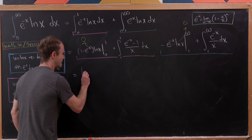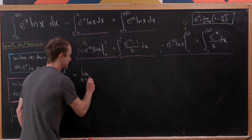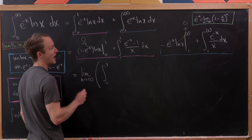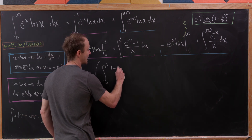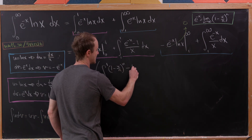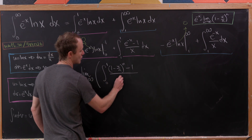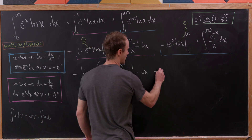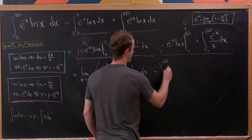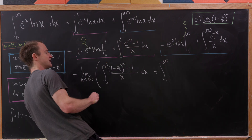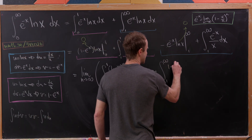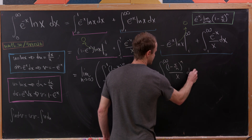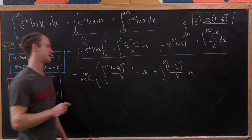So we have the limit as n goes to infinity. Then the integral from zero to one of (1 minus x over n) to the n, minus one, all over x, dx. And then plus the integral from one to infinity of (1 minus x over n) to the n over x — the same thing without that minus one.